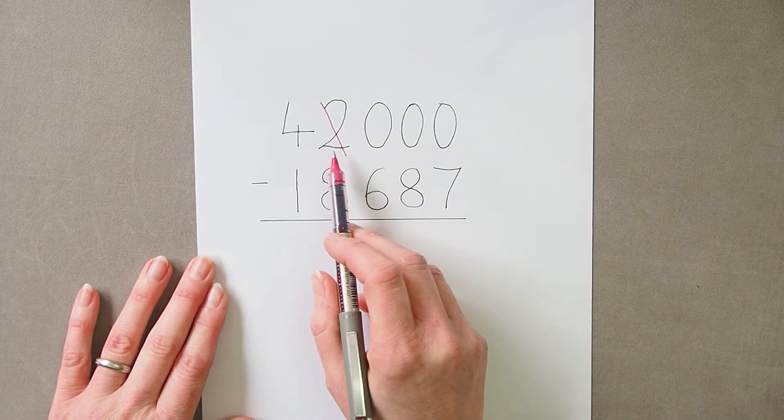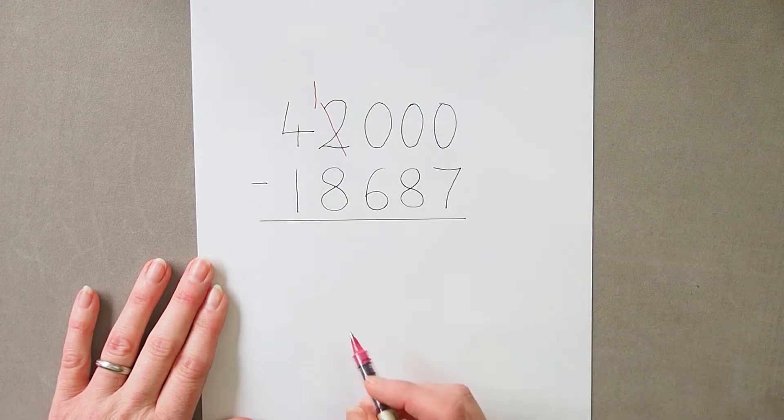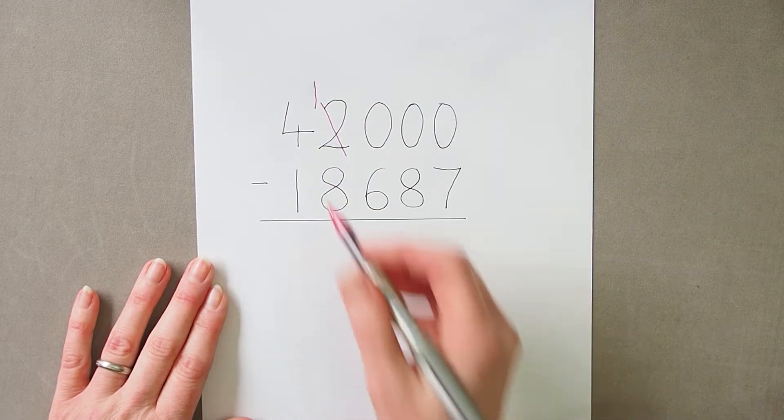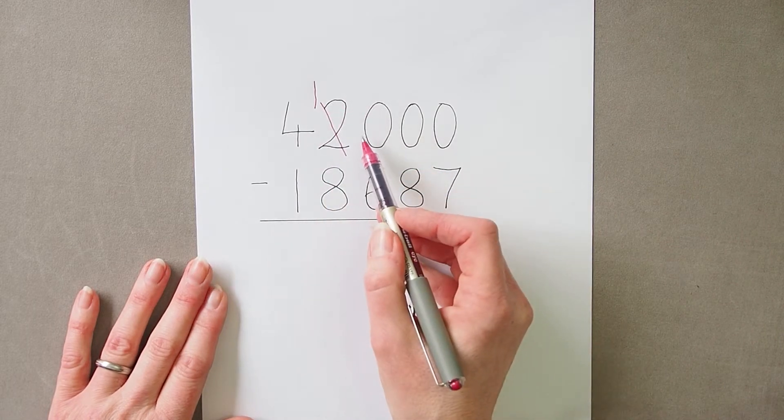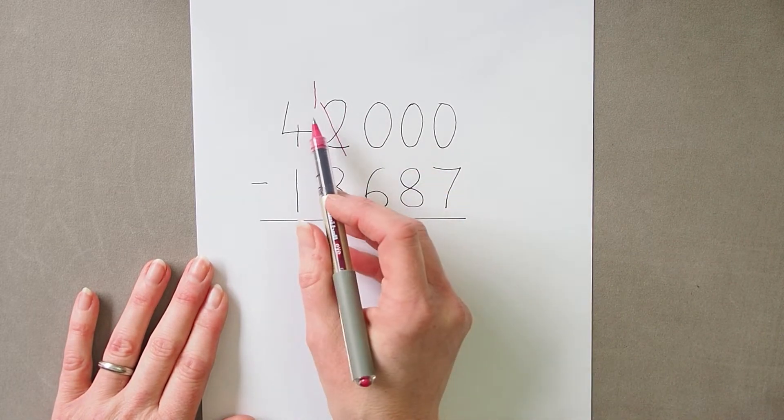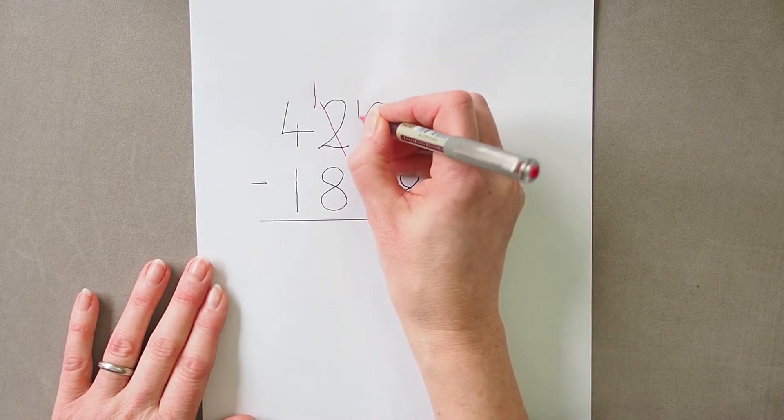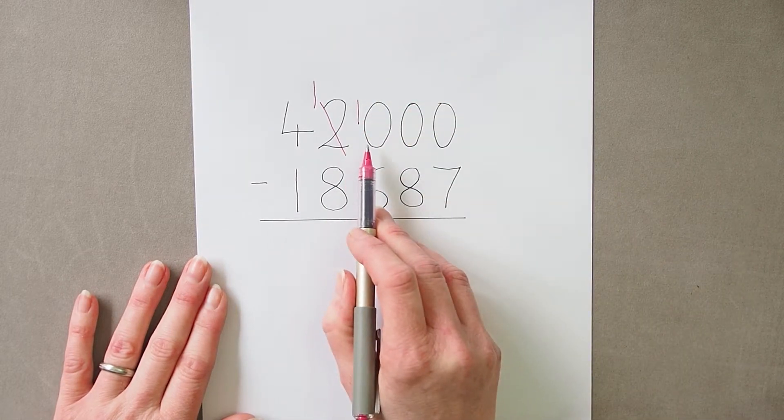So I can take one of these thousands and I would have one thousand left, and now I have to go to the next column because if I exchange one thousand that's going to give me ten hundreds.